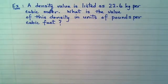Here's an example of a conversion that we need to do not on a single value but actually on a rate, on a conversion factor itself. In this question we have a density value that's listed as 22.6 kilograms per cubic meter and we're asked to determine the value of this density in different units, units of pounds per cubic feet.